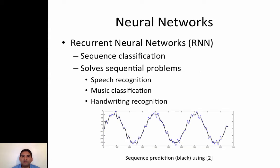So what are recurrent neural networks? RNNs are used to solve sequential problems such as speech recognition, music classification, or handwriting recognition. In this example we see a sequence we're trying to predict: the blue line is the ground truth and the black line is our prediction. We're using LSTM to do the prediction, and you can see the fitting of the polynomial is very good — we can do that through recurrent neural networks.